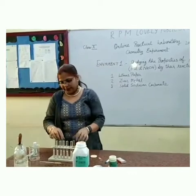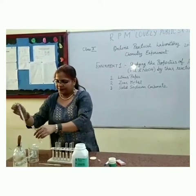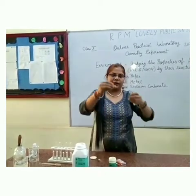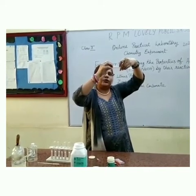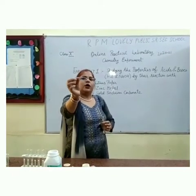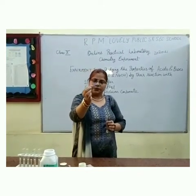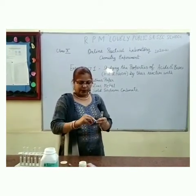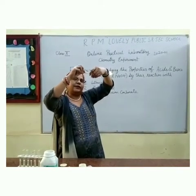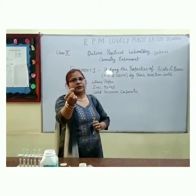Now in another test tube, we will take the base, that is NaOH, and perform the same test. We take the remaining strip of red litmus and put it in the NaOH solution. When red litmus comes in contact with the base, it turns blue. That means bases turn red litmus blue. Now we take blue litmus paper and dip it in the base, and we can see that there is no change of colour — bases do not turn blue litmus, no change occurs.